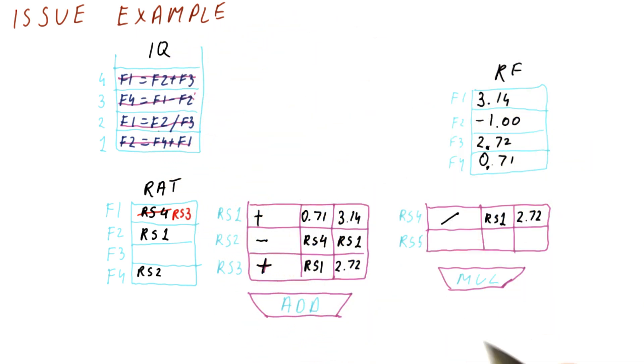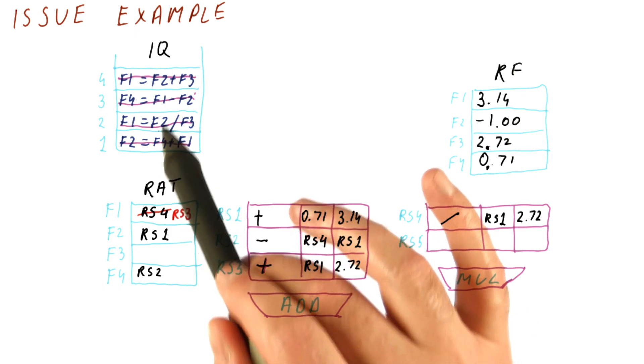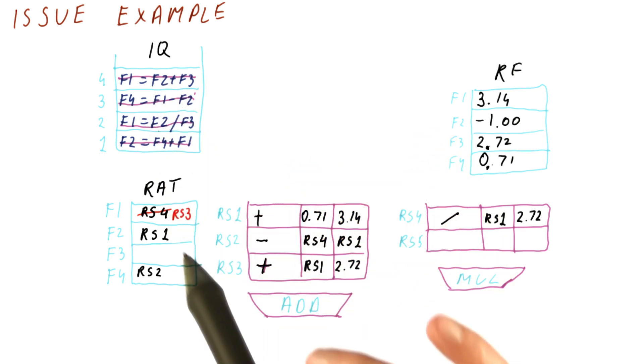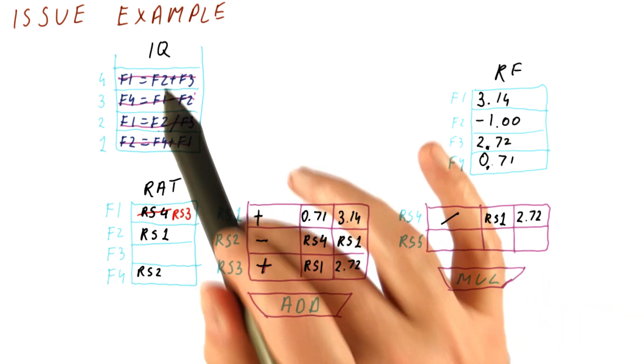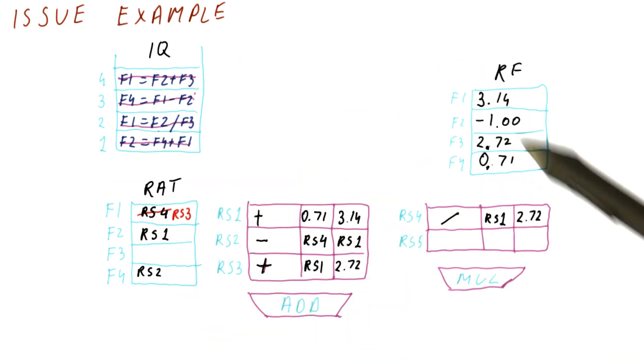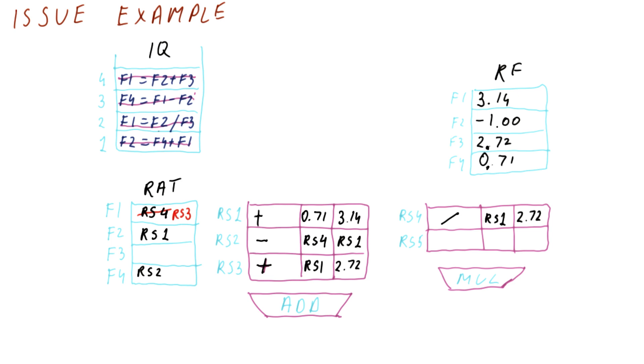And now we have issued all of our four instructions. In a real processor, you would issue one instruction each cycle. And probably some of these instructions would have executed by the time we issue all of them, but I just wanted to show you how issue works if, for example, nothing could execute for some reason. Now that we have gone through an example of issuing, let's see what the next step is.